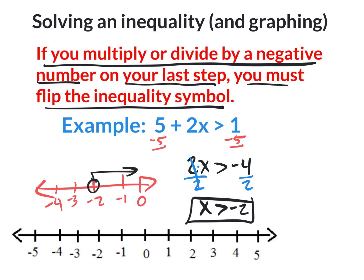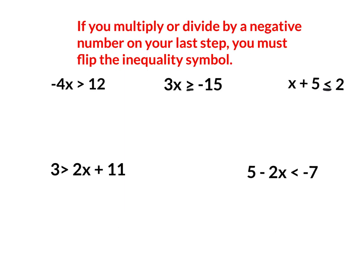Now practice solving one- and two-step inequalities. Remember the rule: if you multiply or divide by a negative number on your last step, you must flip the inequality symbol. First example: negative 4 times x. To get rid of multiplication by negative 4, divide by negative 4 on both sides. This is our last step and we are dividing by a negative, so we flip the inequality. The result is x < -3 — it changed because we divided by a negative.